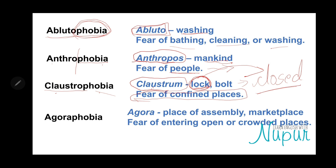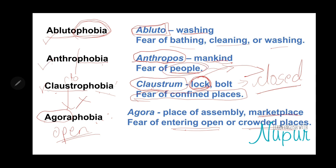Claustrum means closed spaces, so claustrophobia is the fear of closed spaces. The opposite word is 'agora.' Agora means open spaces — a marketplace or an open area. So, closed spaces means claustrophobia; open spaces means agoraphobia. Abluto is washing, anthropos is mankind, claustro is closed spaces, agora is open spaces.